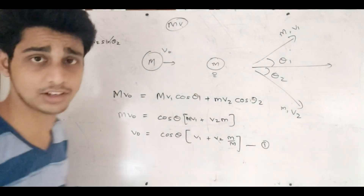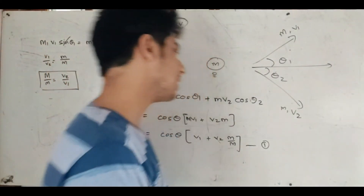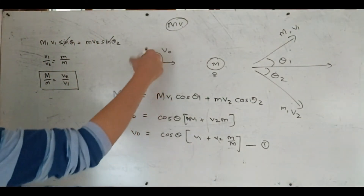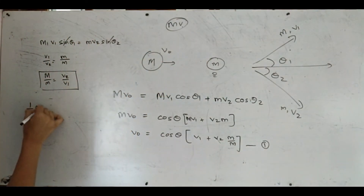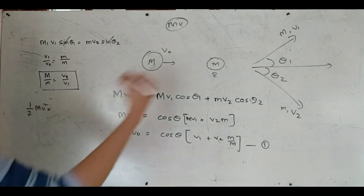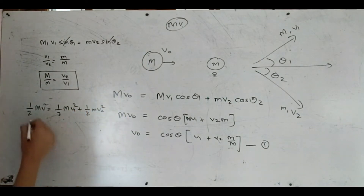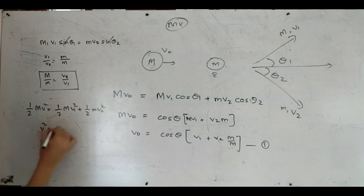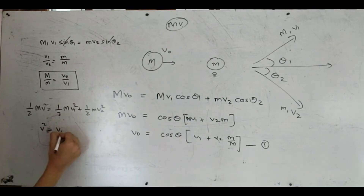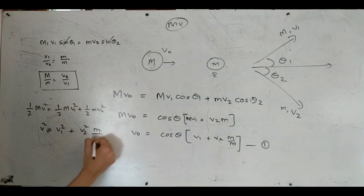We do the conservation of energy. Initial kinetic energy is half capital M V0 squared. Final energy equals half capital M V1 squared plus half small m V2 squared. Dividing through by M, we get V0 squared equals V1 squared plus (m/M) V2 squared.